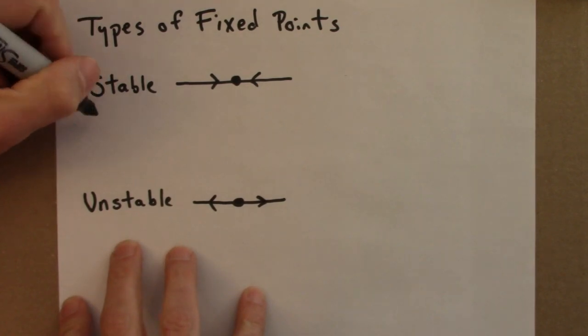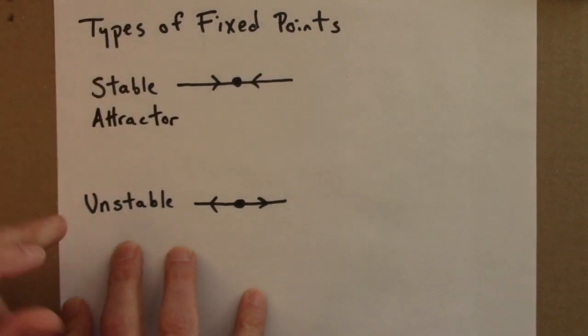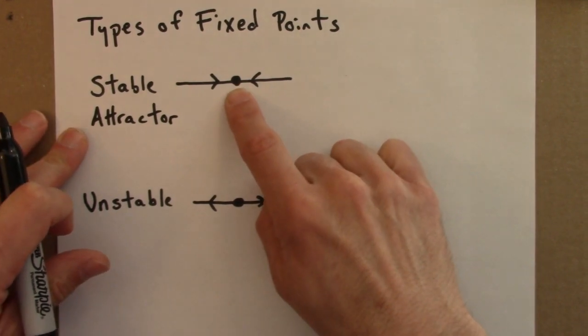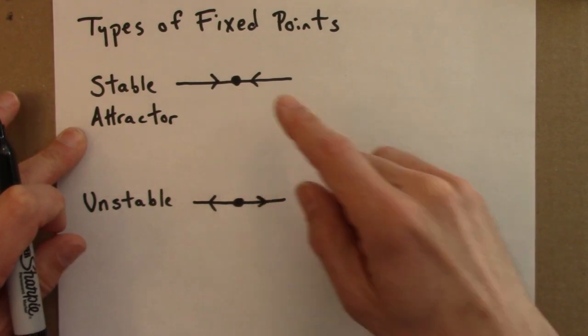A stable fixed point is also called an attractor. It's called an attractor because it attracts points. Nearby points get pulled towards it. You might also say it's an attractive fixed point.